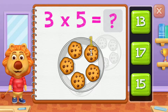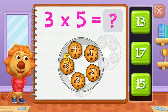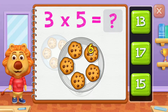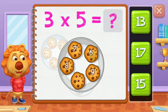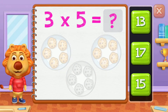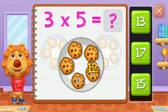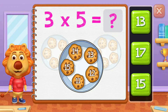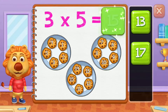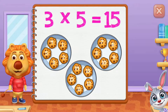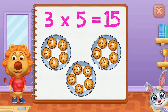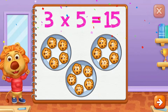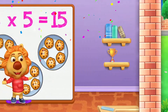1, 2, 3, 4, 5, 6, 7, 8, 9, 10, 11, 12, 13, 14, 15. 3 groups of 5 equals 15.